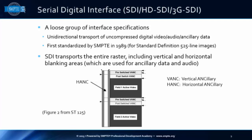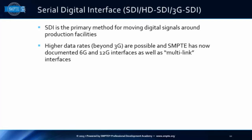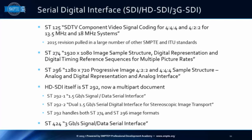The way SDI works is it transports the whole raster, including vertical and horizontal blanking, which we reuse for data and audio. So there's not a whole bunch of wasted bandwidth. Backwards compatibility remains a major goal. SDI is the primary method for moving signals around a production plant. Higher data rates beyond 3 Gbps are indeed possible, and we now have documented both 6 Gbps and 12 Gbps interfaces as well as some multi-link interfaces.